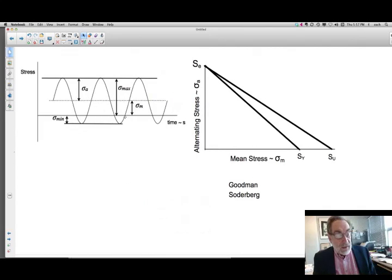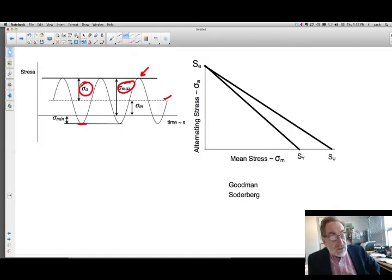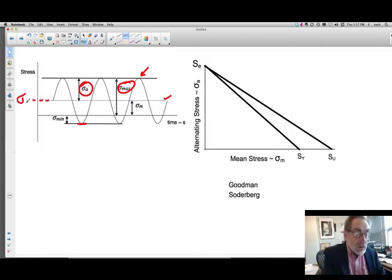So we have this kind of case where the stress being applied has a maximum value as indicated here and it's got a minimum value that comes down to here. Obviously the mean stress is at this location and we still have our same sigma alternating, and this is at sigma mean stress.